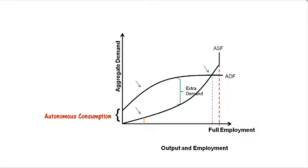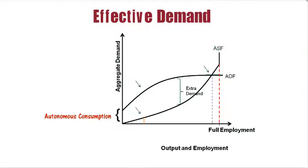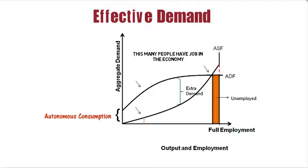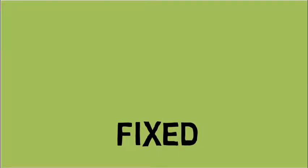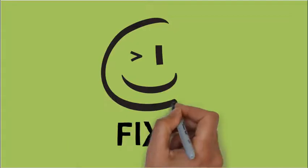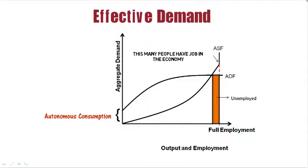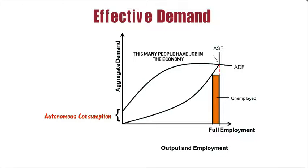This point of equilibrium is what Keynes referred to as effective demand. According to Keynes, this is the point that determines how many people have jobs in the economy. Now, this level of employment is not the full level of employment — these many people are still jobless. The only way to reach full employment is to get the point of effective demand at full employment. Since the supply of raw materials, land, building, etc. is fixed in the short run, it's not possible to do anything to the aggregate supply function. The only way to reach full employment would be to move the aggregate demand function.